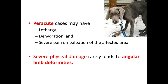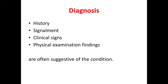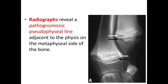Acute cases may also have lethargy, dehydration, and severe pain on palpation of the affected area. Severe physeal damage can rarely lead to angular limb deformities. Diagnosis is based on history, signalment, clinical signs, and physical examination findings.